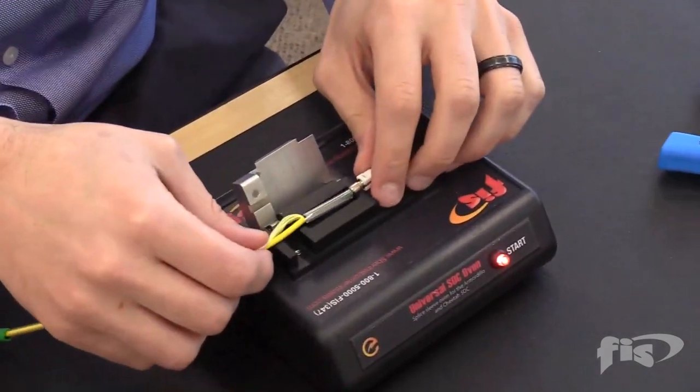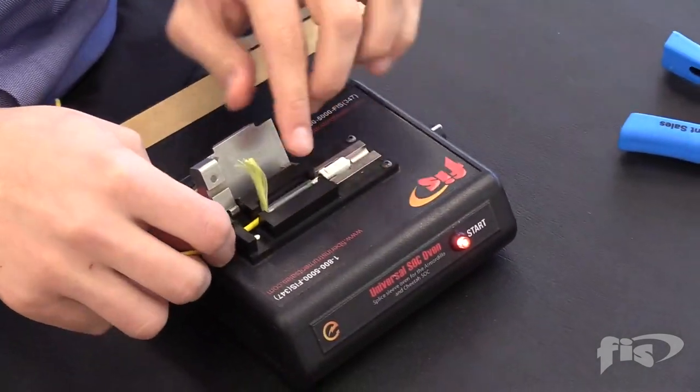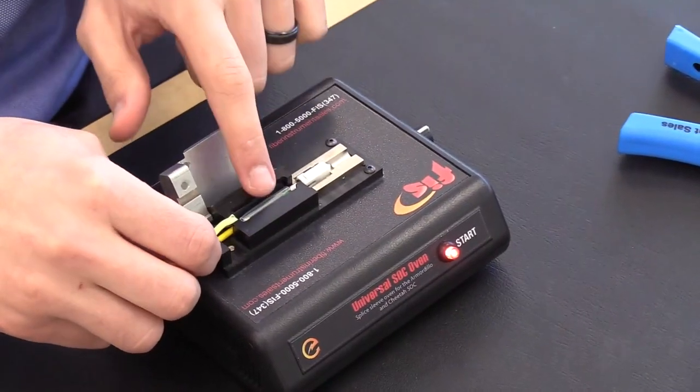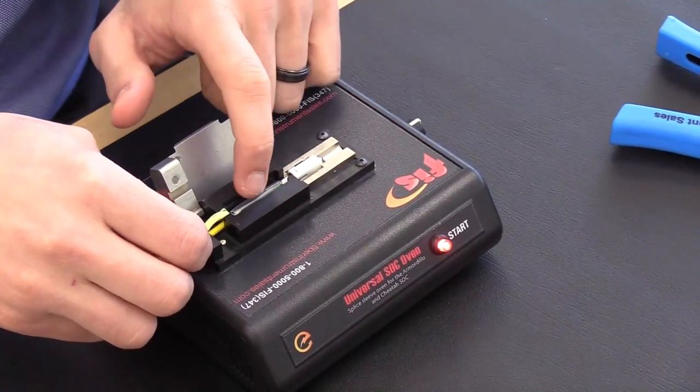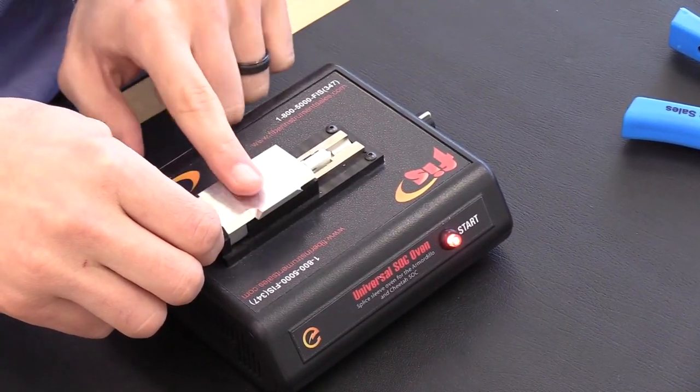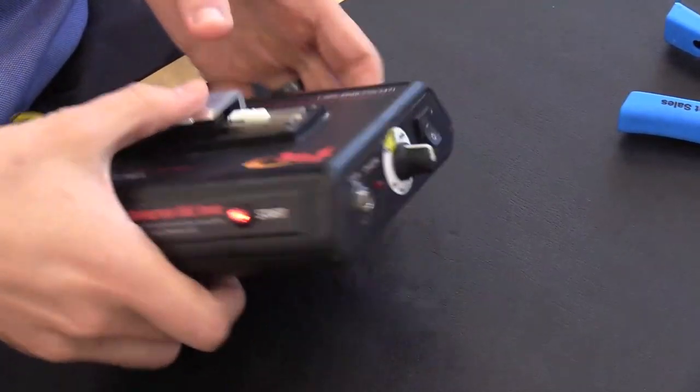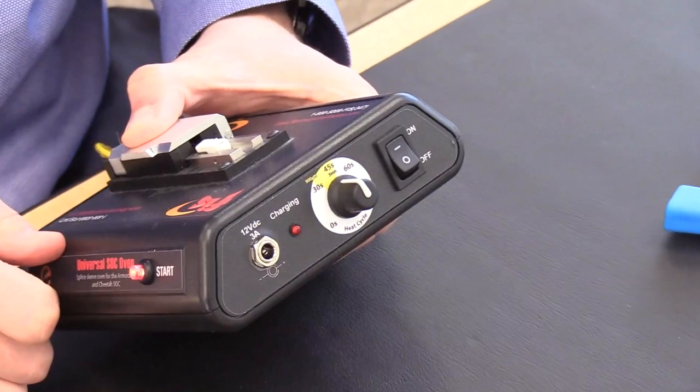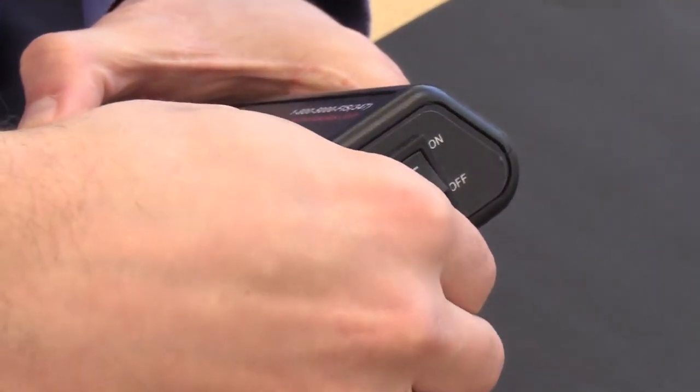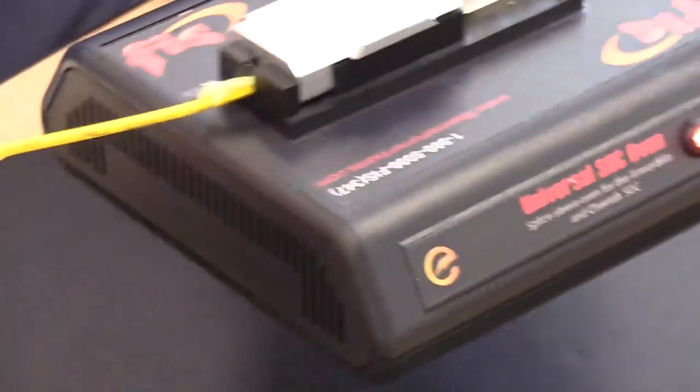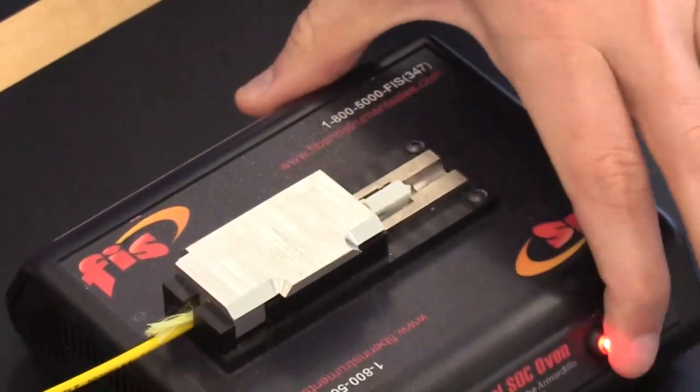Place it into the oven. Make sure that the sleeve stays in place and doesn't go over the back end of the connector. On the side of the oven, there is a knob to indicate the heater time for the type of splice-on connector. Set it to 3mm or 45 seconds. Press Start.